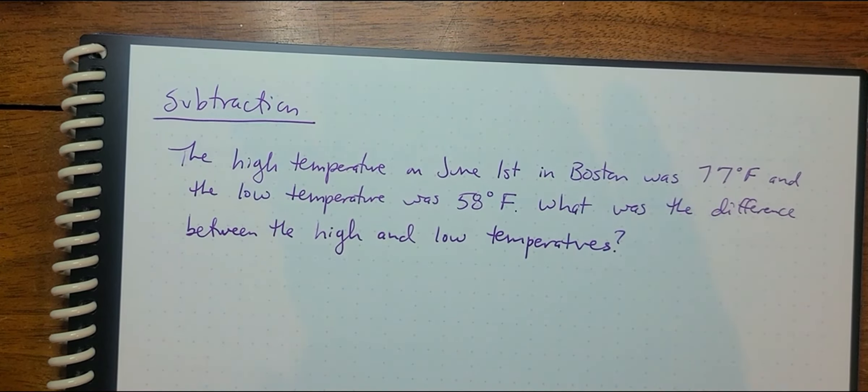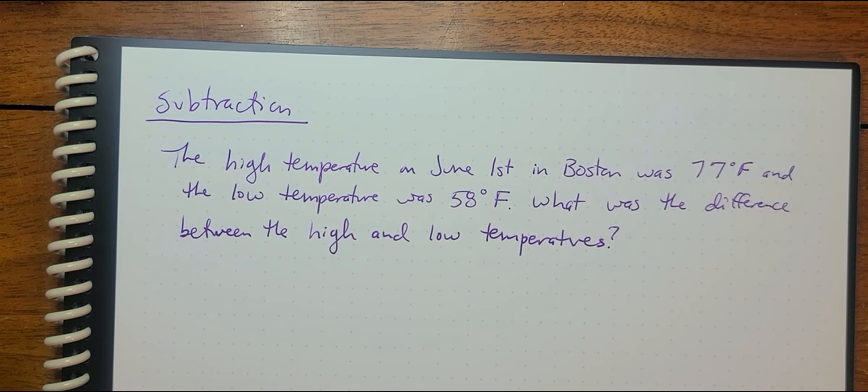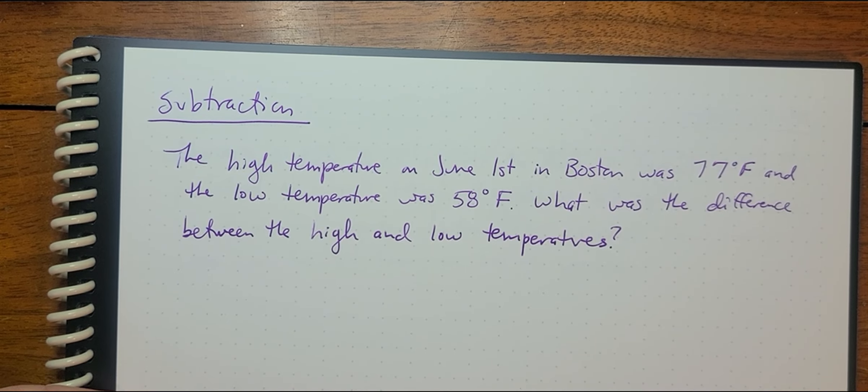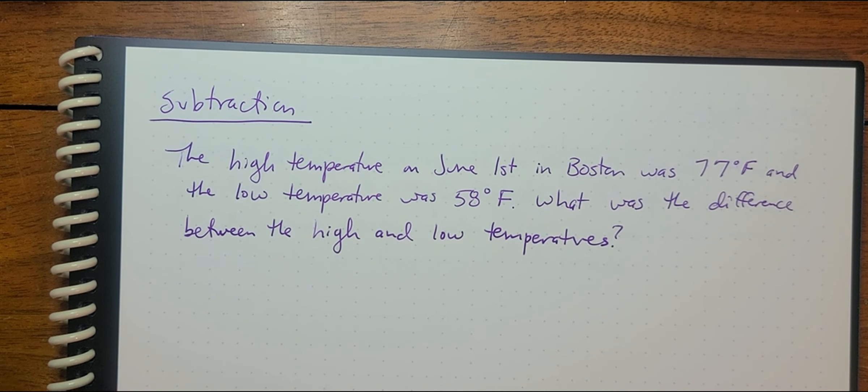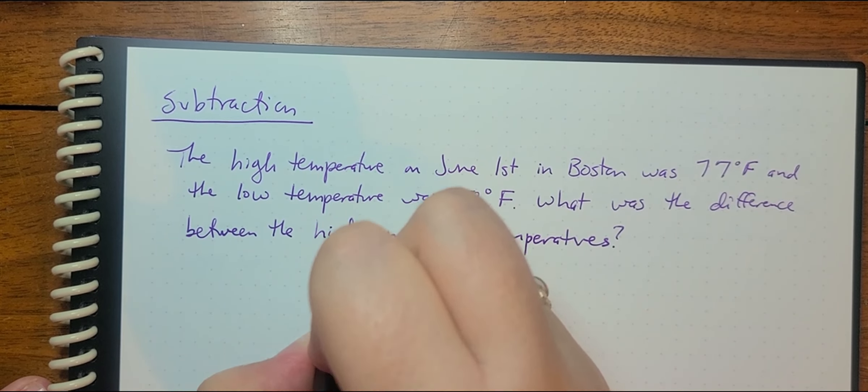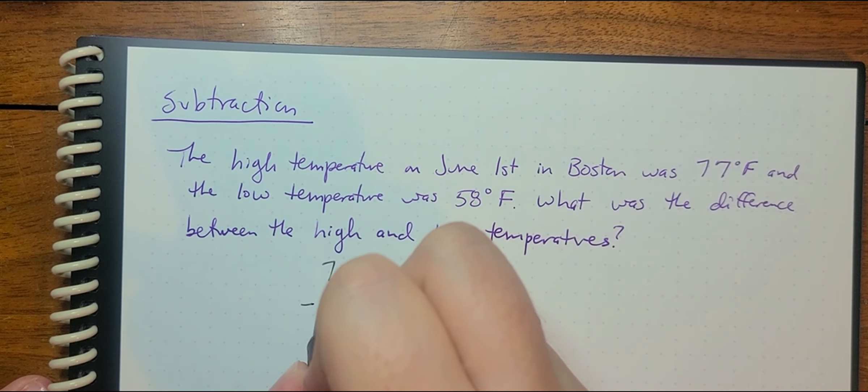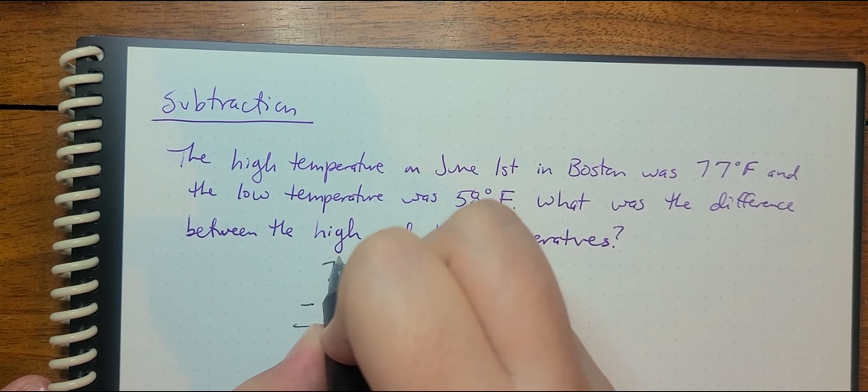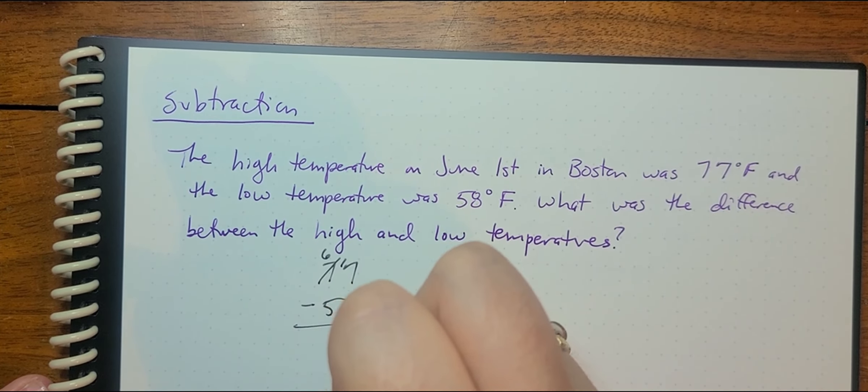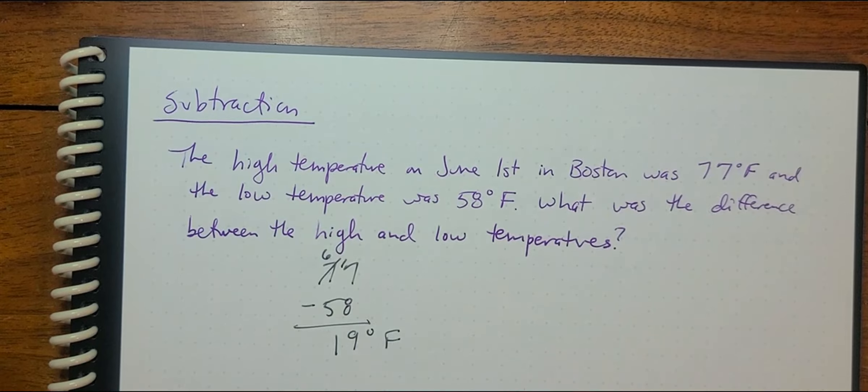We also can use applications with subtraction. So here we have the high temperature on June 1st in Boston was 77 degrees Fahrenheit, and the low temperature was 58 degrees Fahrenheit. What was the difference between the high and low temperature? Well, we know that difference refers to subtraction. So we're going to just take 77 degrees minus 58 degrees, and the difference is 19 degrees Fahrenheit.